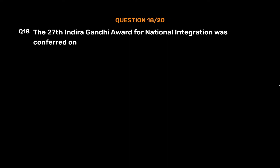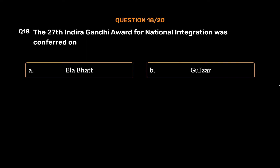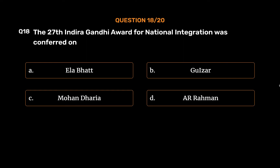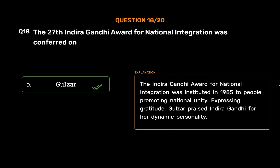Question No. 18: The 27th Indira Gandhi Award for National Integration was conferred on — the correct answer is Option B, Gulzar. The Indira Gandhi Award for National Integration was instituted in 1985 to people promoting national unity. Expressing gratitude, Gulzar praised Indira Gandhi for her dynamic personality.